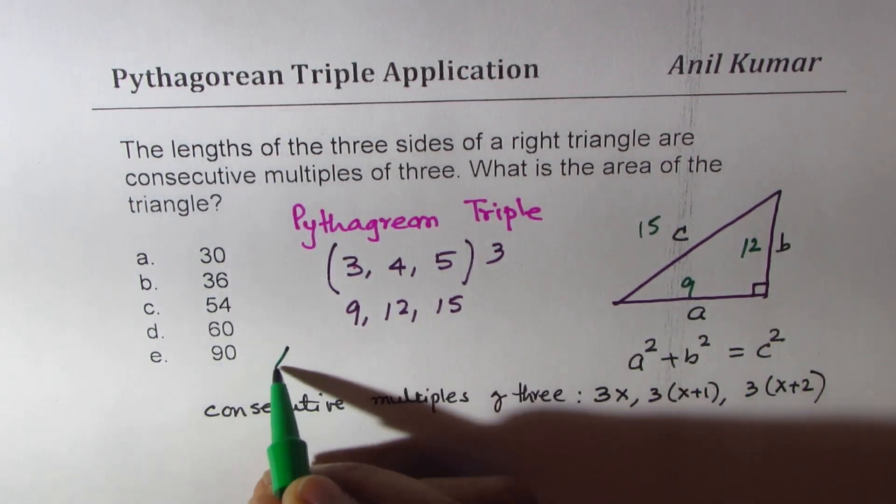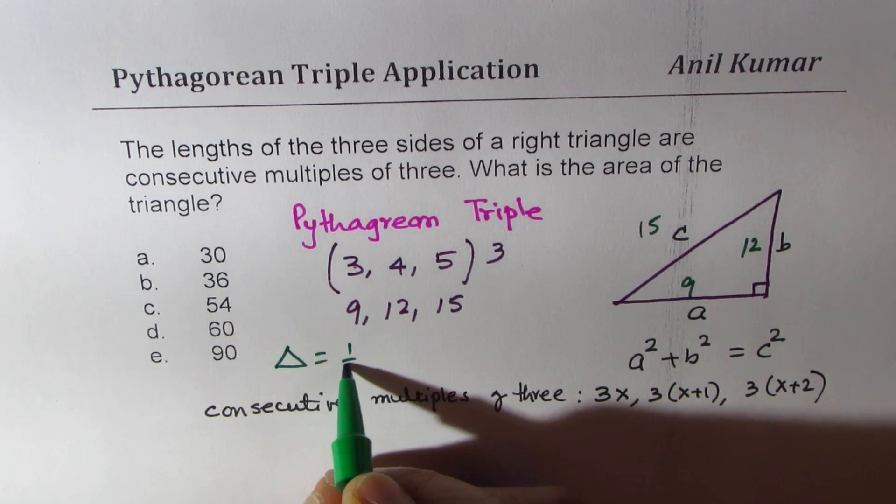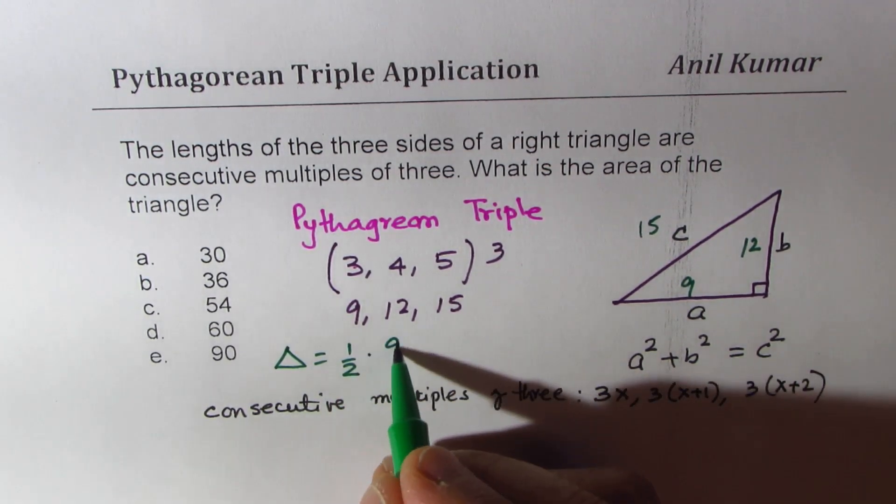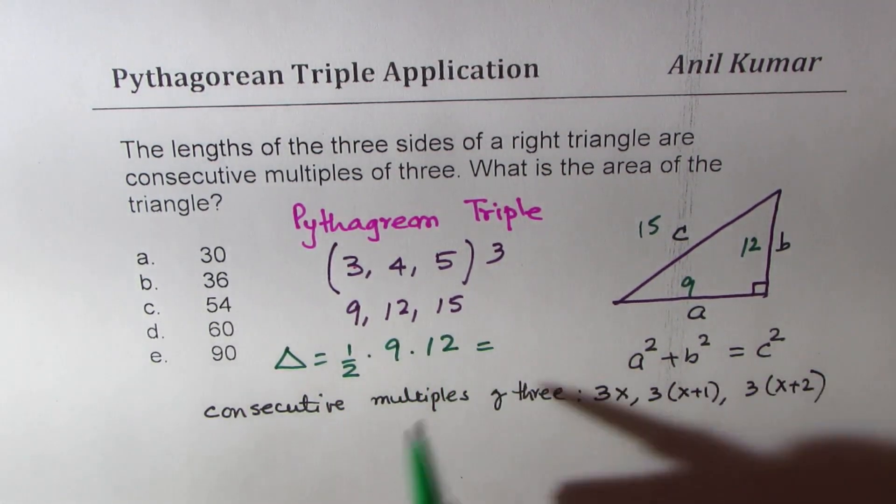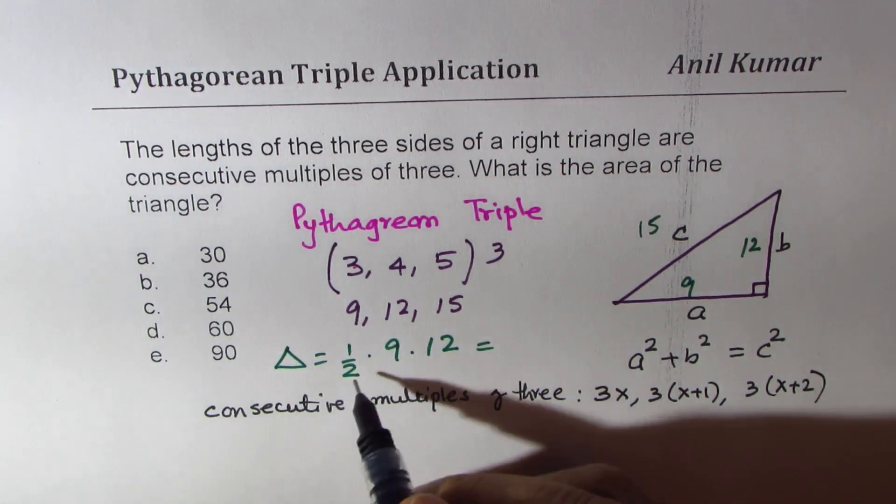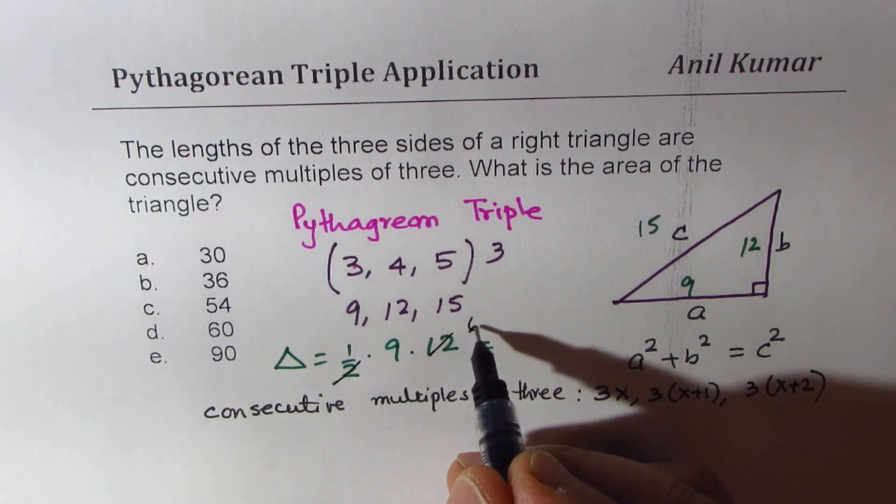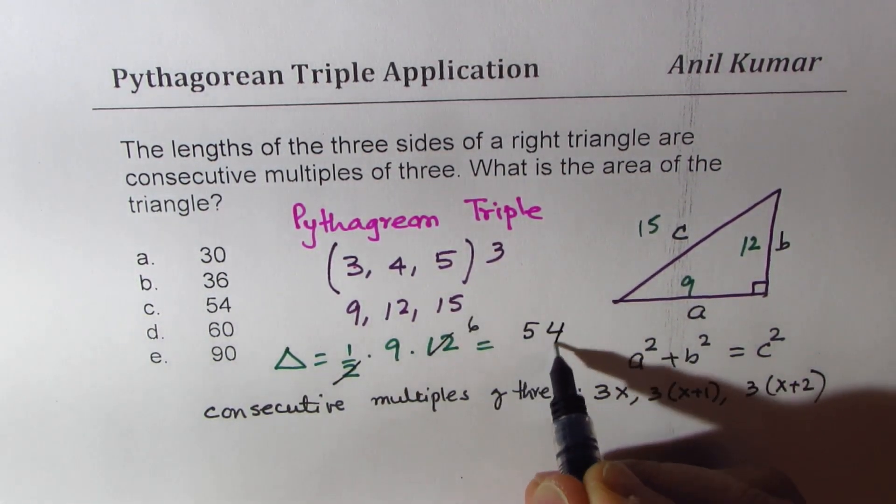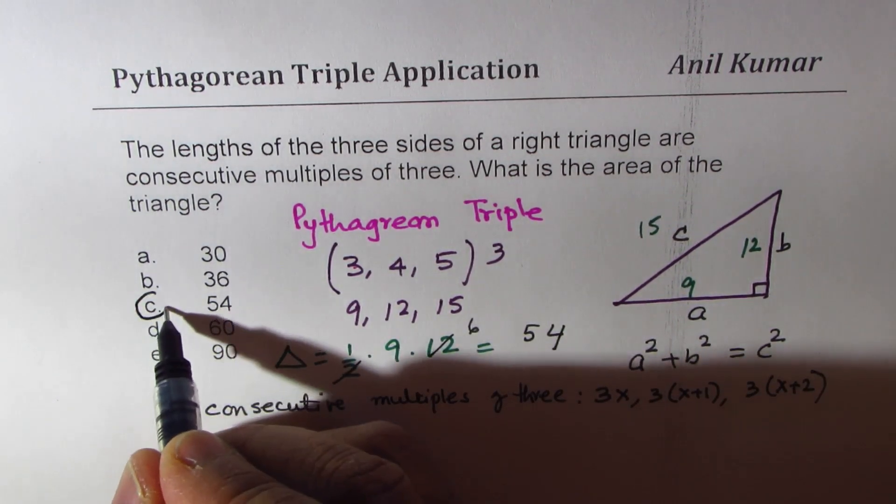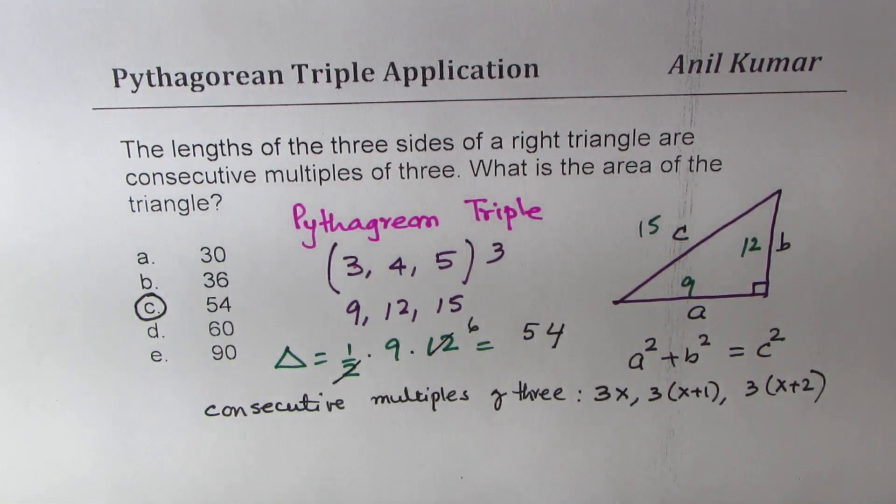Area of the triangle will be how much? Area of the triangle will be half times nine times 12, correct? So which you could easily find as nine times six as 54, and so option C is the right option, correct?